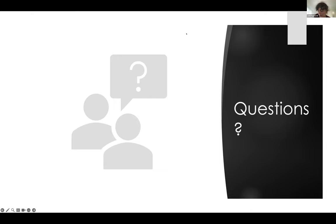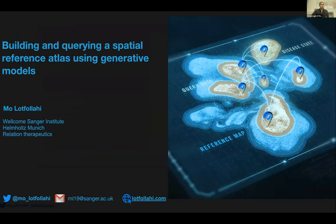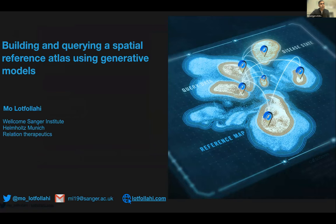Our next speaker is Mohamad Lotfollahi, a junior PI at the Sanger Institute working on machine learning approaches for single-cell data analysis and atlases. Very excited to be here. My work during my PhD and now is about how we can use machine learning and generative modeling to unlock the potential of the human cell atlas. We can look at the human cell atlas as a very good resource or search engine where we can ask high-level queries — like what is the effect of a certain drug, which cells are disrupted — and the question is how we can efficiently perform these queries.